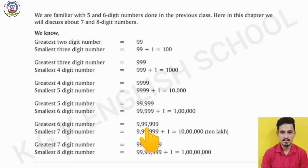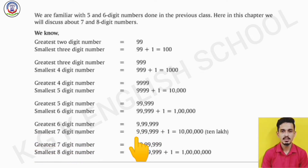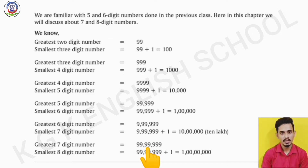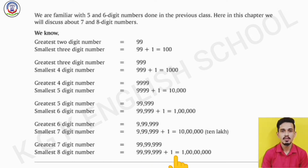The greatest 6-digit number is six 9's, that is 9,99,999. So the smallest 7-digit number is 9,99,999 plus 1, that is 1 followed by 6 zeros, called 10,00,000. The greatest 7-digit number is seven 9's. The smallest 8-digit number is 99,99,999 plus 1, that is 1 followed by 7 zeros, which is called 1 crore.